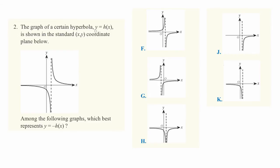The graph of a certain hyperbola, y equals hx, is shown in the standard xy coordinate plane below. Among the following graphs, which best represents y equals negative hx?